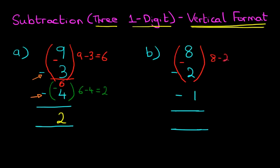8 minus 2. So what is 8 minus 2? The answer is 6. So we can put an equal sign here and write down 6.